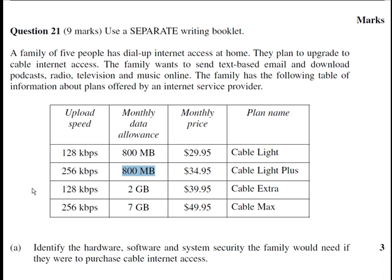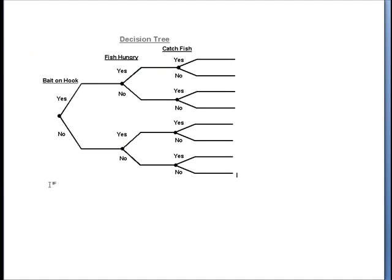Decision trees firstly contain every possible outcome that appears in a range of data or whatever you have. In this case it is all of these options here. A decision tree normally looks something like this — every possible outcome has its own path. As you move along the tree you will get to an outcome according to different specifications such as bait on hook, fish hungry, etc.